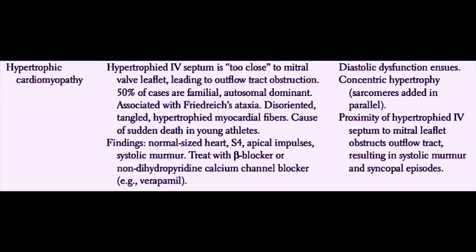50% of these cases are familial, autosomal dominant. Hypertrophic cardiomyopathy is associated with Friedreich's ataxia, and is often associated with disoriented, tangled, and hypertrophied myocardial fibers. This is a common cause of sudden death in young athletes.